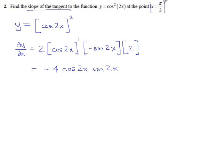Now, the angle they've given us here is π/2, which is 90 degrees. So when we go to do our calculation here, we get negative 4 cosine 2 times 90, and then the sine of 2 times 90.